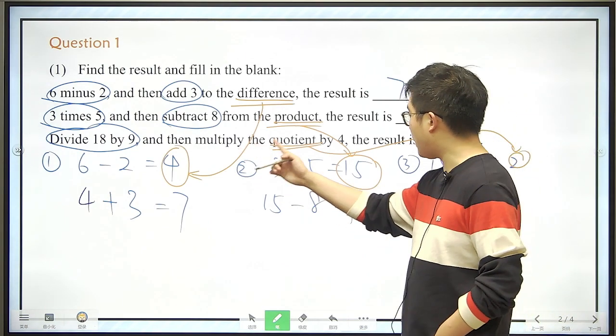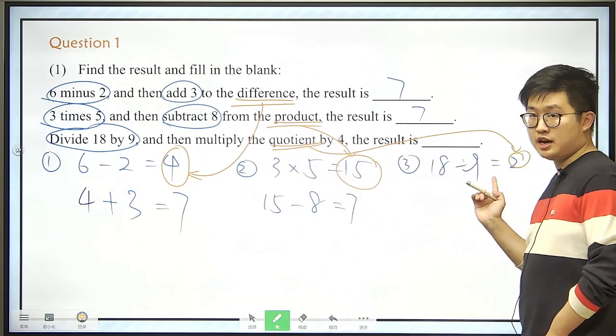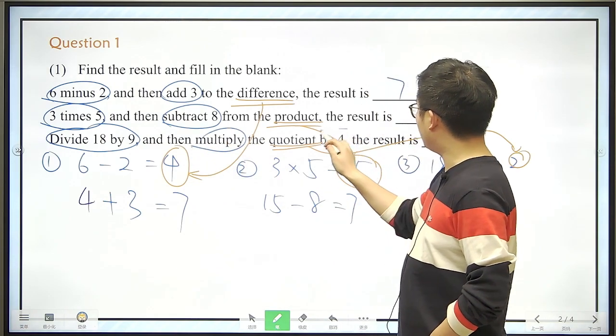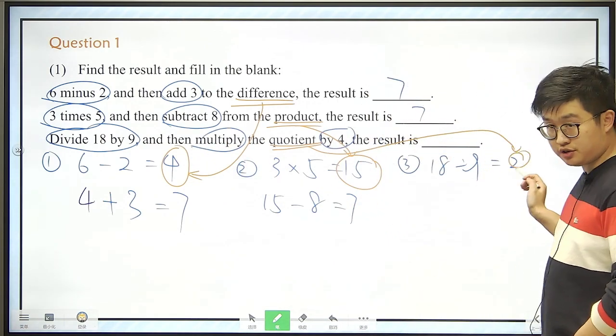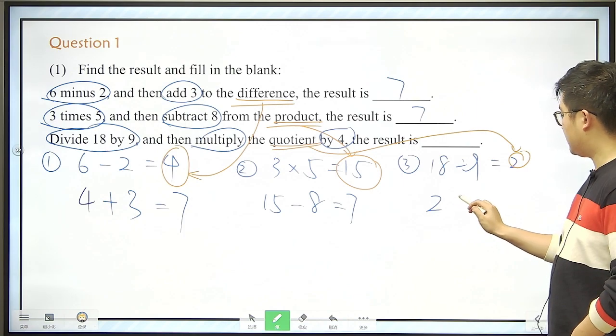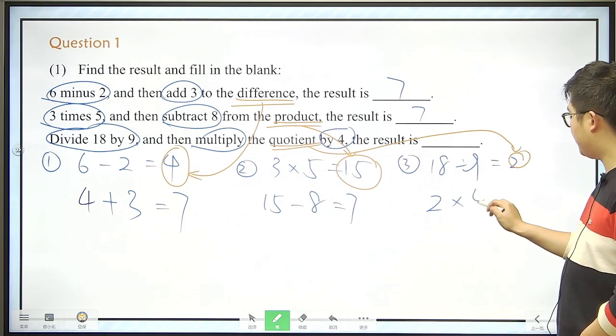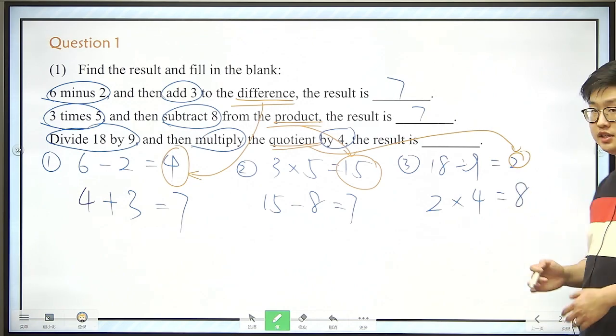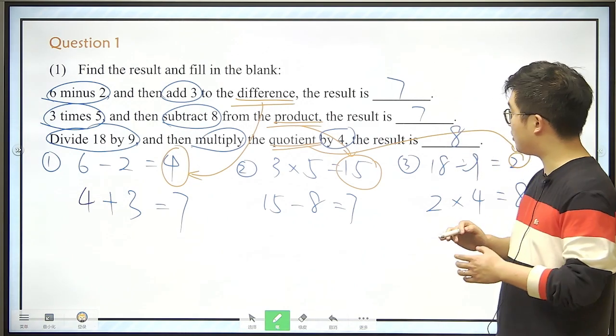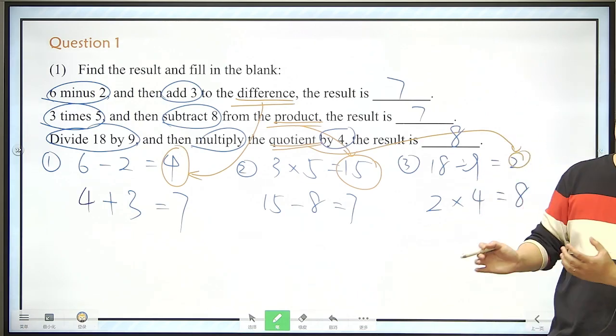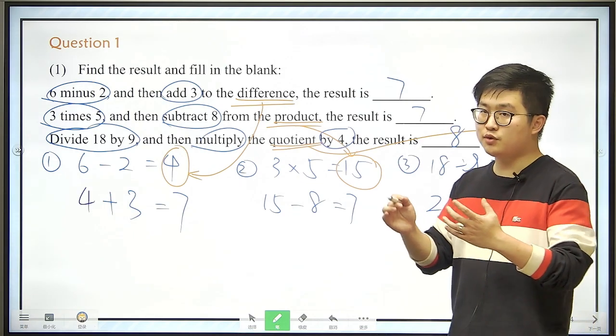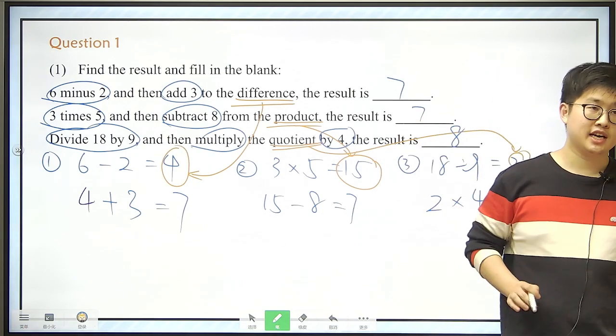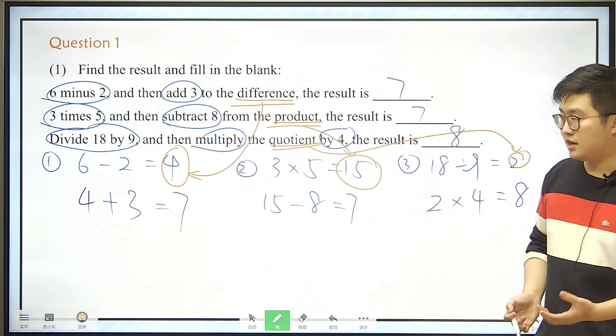So we should multiply the quotient, which is 2, by 4. So this is what we do, we multiply the quotient, which is 2, multiplied by 4. So the answer would be 8. So 8 is the correct answer for our third question. So this question is very easy, right? We just read it carefully, and write it down, and get the answer.